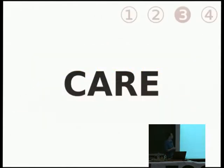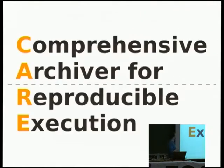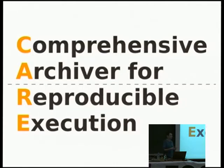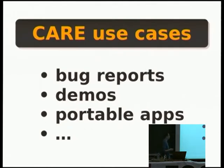Let's take CARE as an example. CARE is heavily based on PRoot, but it doesn't have the same purpose at all. CARE stands for Comprehensive Archiver for Reproducible Execution. In a couple of words: it will observe the execution of your program and archive on the fly all the files and directories before any modification. At the end, you get an archive you can share with anyone, and they will be able to reproduce the execution in exactly the same conditions. This is typically useful for reproducible bug reports, demos, and portable apps.